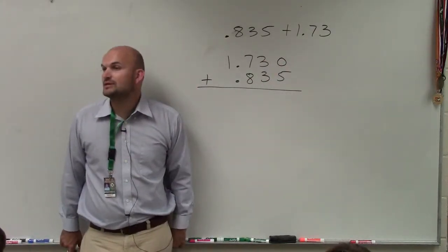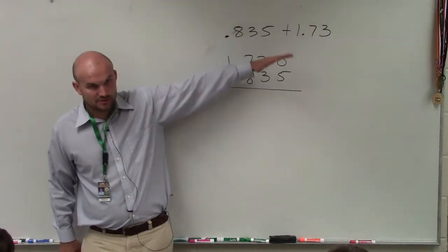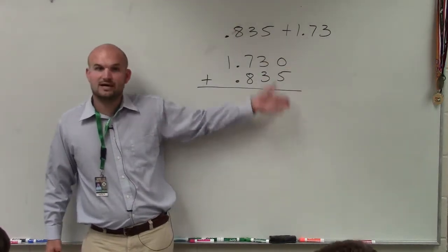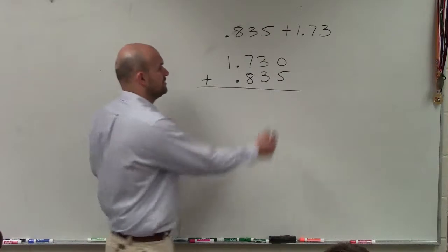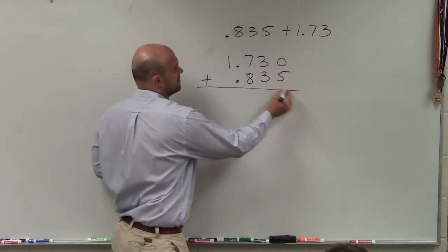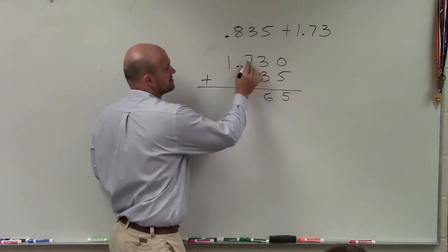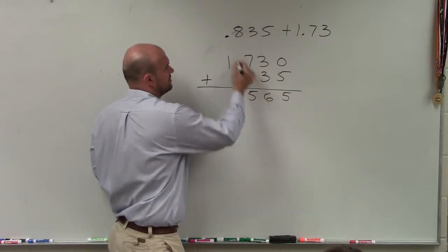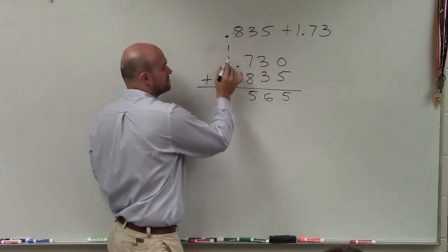Now, just like what we did last class where we did multi-digits, you're simply just going to add vertically. And when you go over 10, you carry it over to the next place. So 0 plus 5 is 5. 3 plus 3 is 6. 7 plus 8 is 15. Bring over the 1. 1 plus 1 is 2.